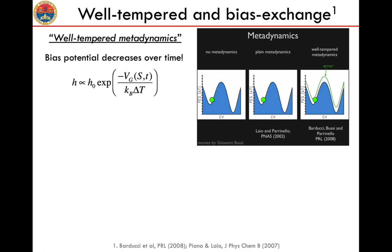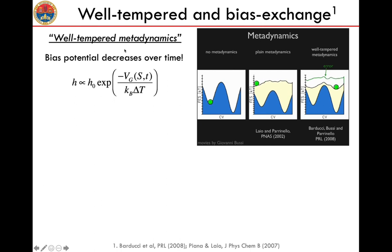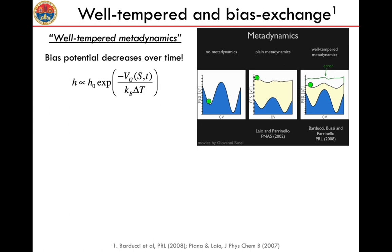There are several flavors of metadynamics and we use in particular the combination of two of them. The first one is the so-called well-tempered metadynamics. As you can see in this movie, you fill much less than in standard metadynamics because the potential is decreased exponentially over time, and in particular you reduce the height of the Gaussians at regions of the collective variable space that you have already visited. In this way you can sample for longer time while perturbing the system much less.